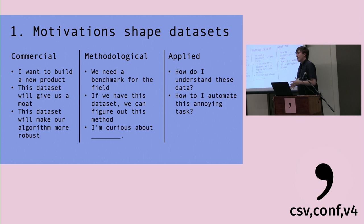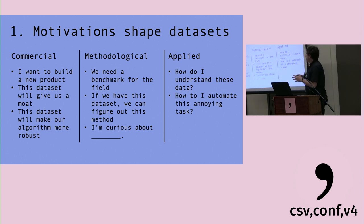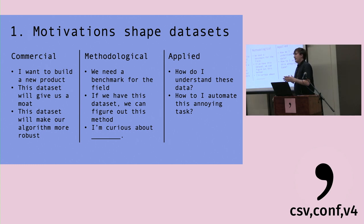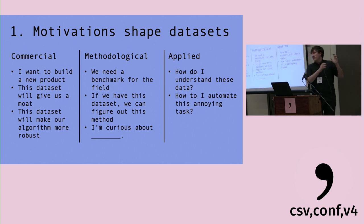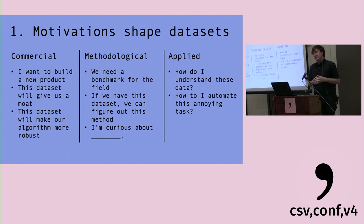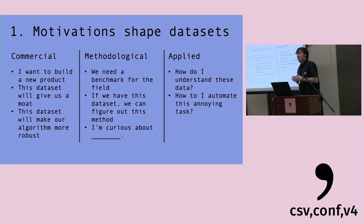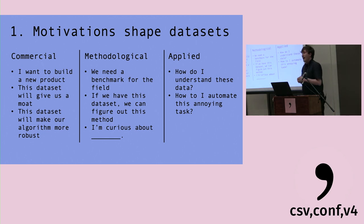The first lesson is that motivation shapes data sets more than anything else. When we dug in and asked people 'why are you doing this?', people are at completely cross-purposes. There's a set of motivations I'd describe as commercial: people who want to build a new product, who've pitched an idea and need enough data to build that minimum viable product to get fundraising. Another group says 'I need this data set as my moat' — access to these records is what keeps competition away. And there are commercial folks who know their algorithm has a problem — say, it doesn't work to detect hate or bias in hiring — and are working to fix it before someone calls them on it.